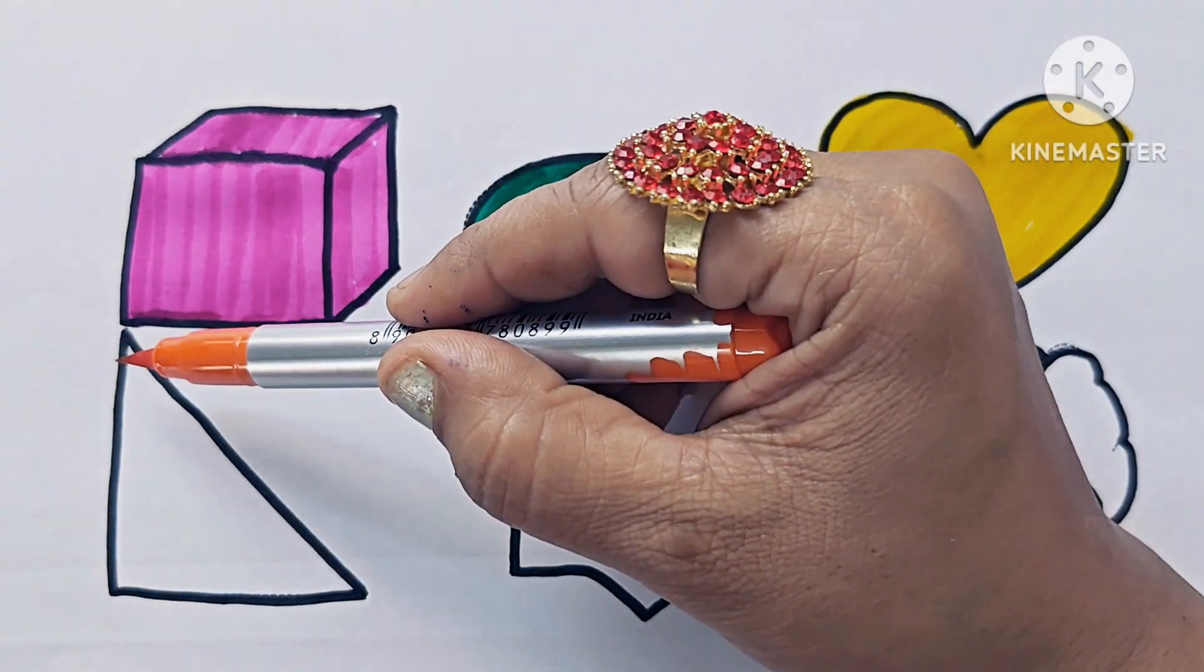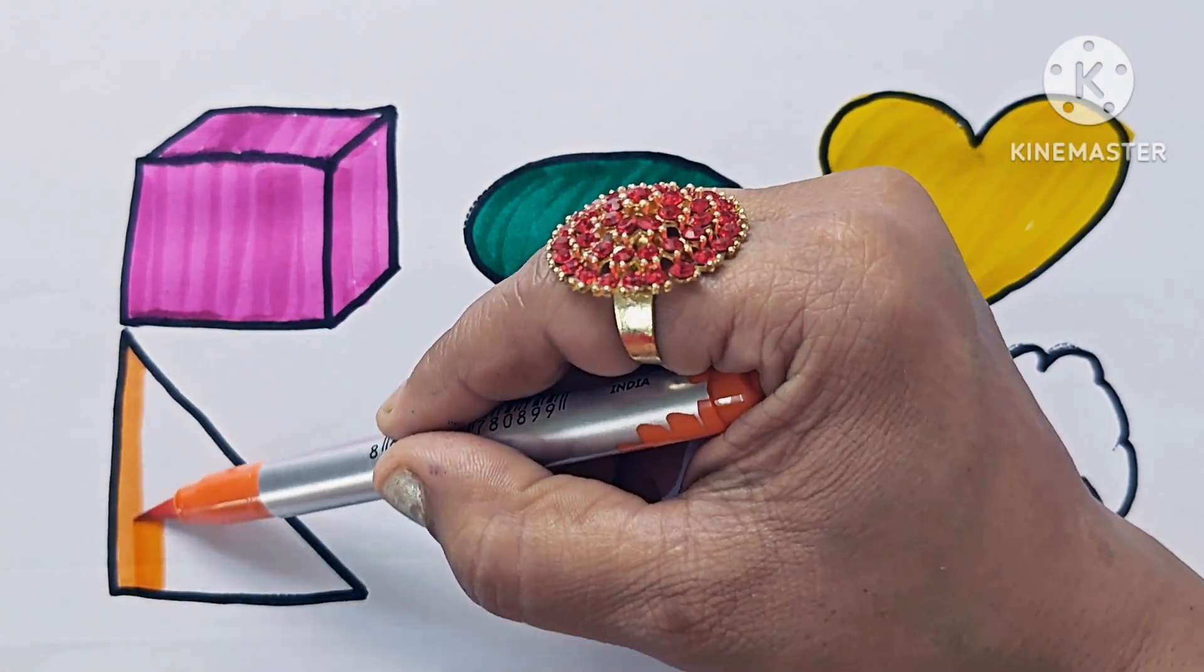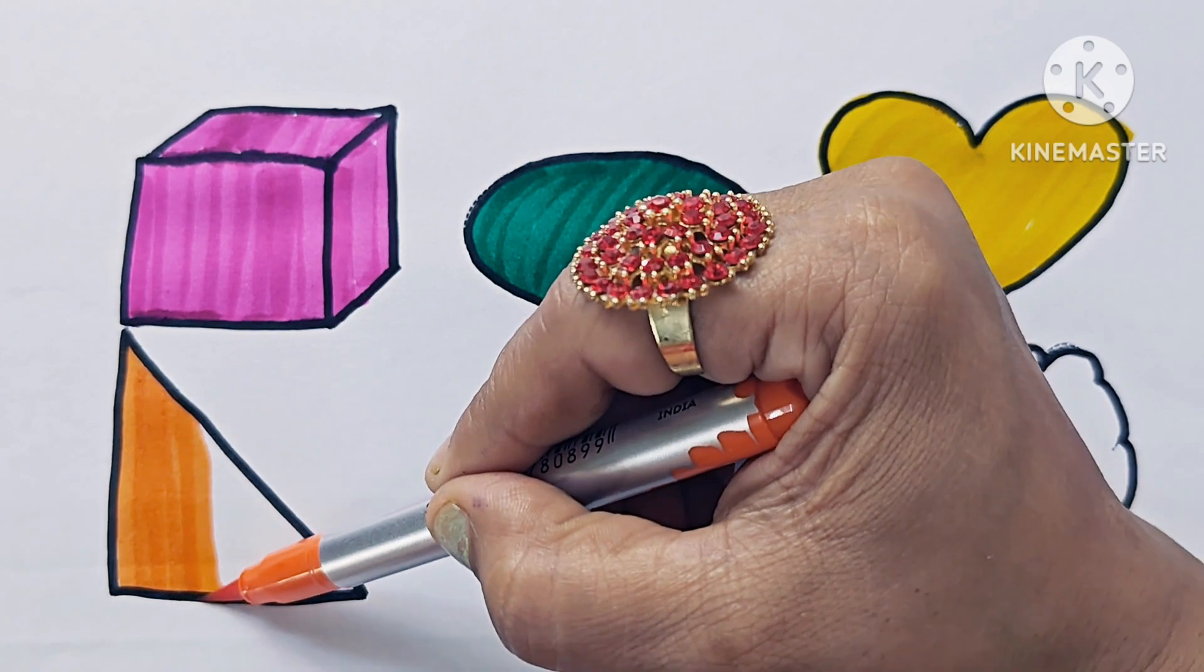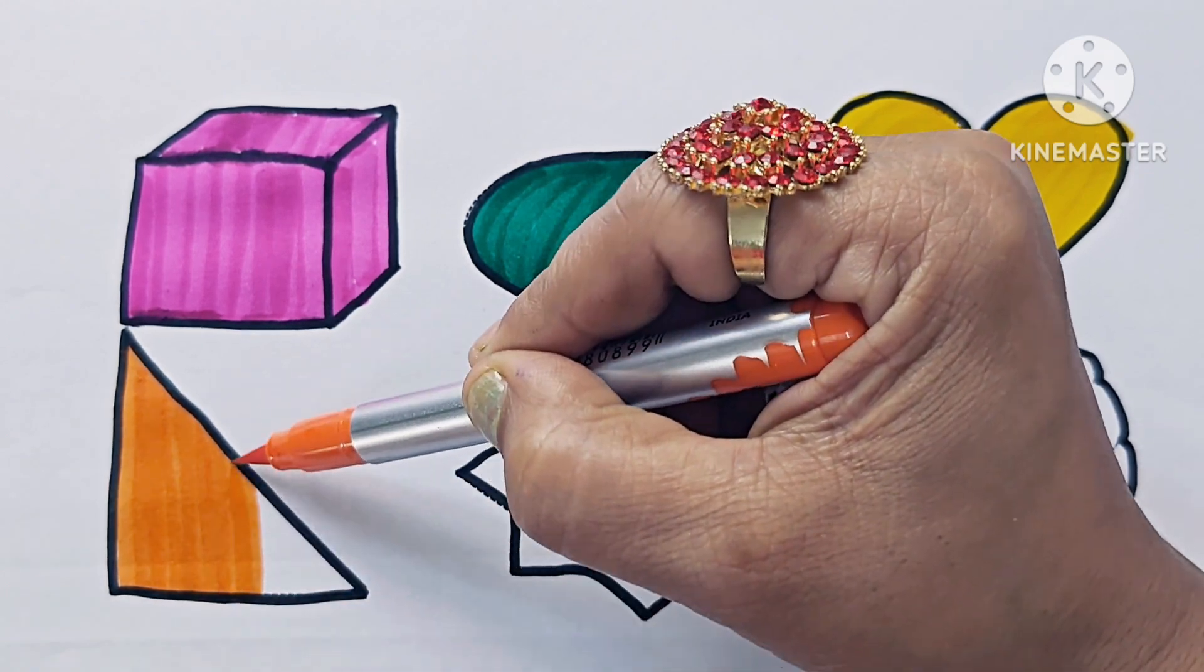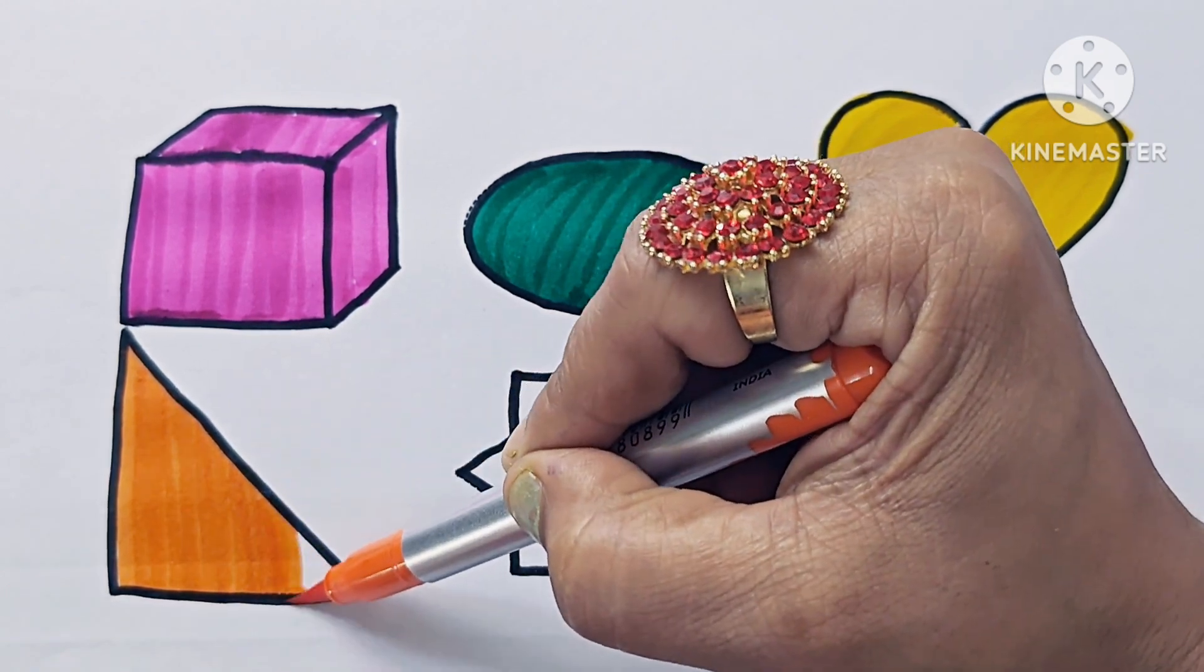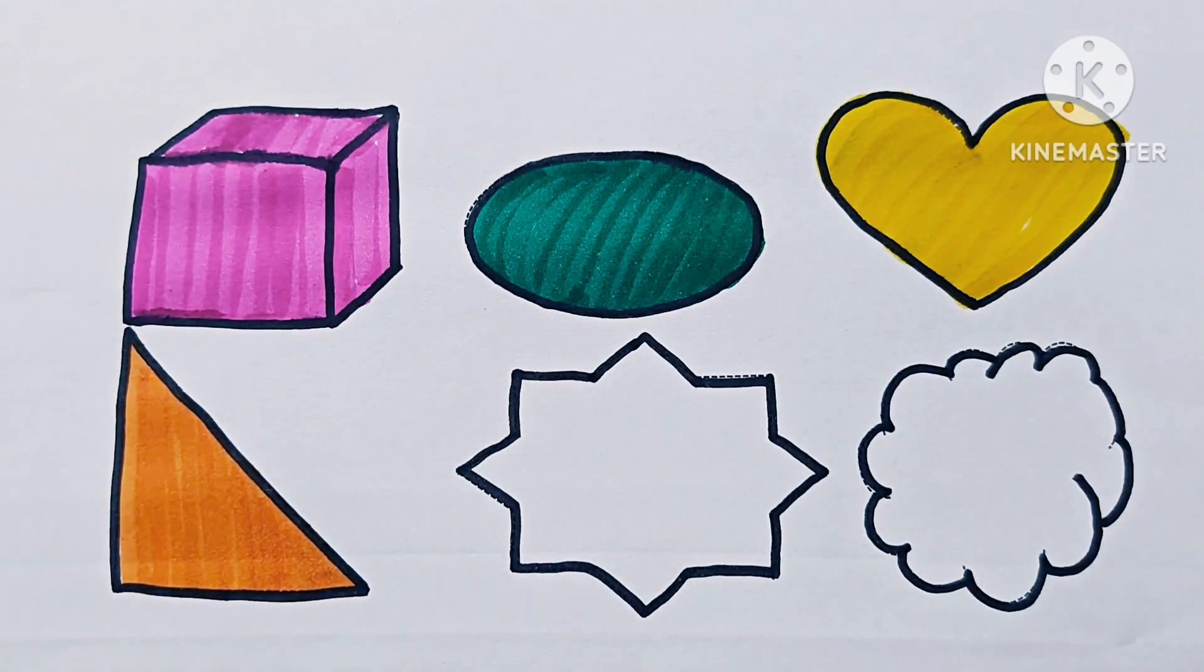Orange color. This is right angle triangle. 3 sides, 3 corners, 3 angles, 3 vertices, 1 angle 90 degrees. This is 2D shape.